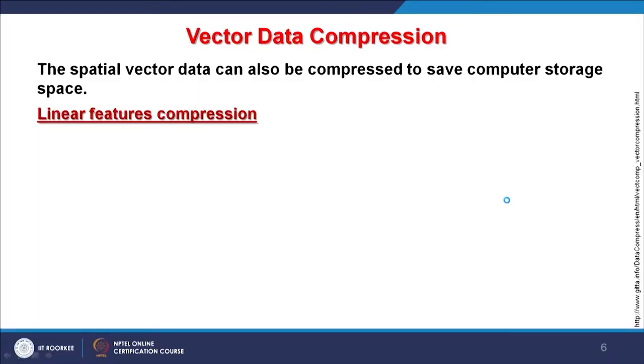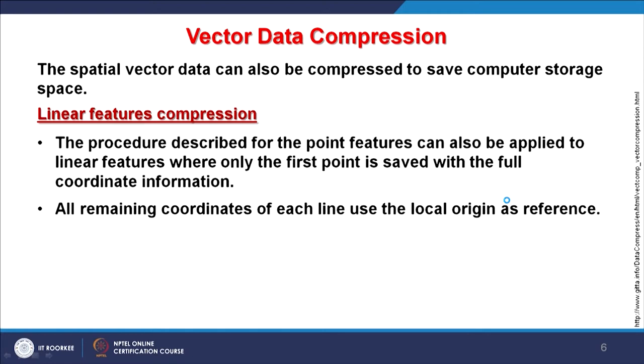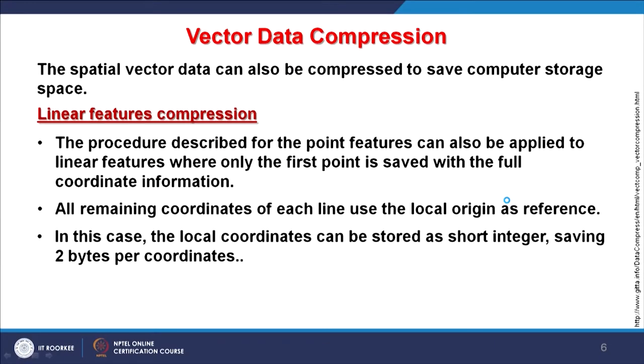For line features compression, this procedure for point features can also be applied similarly to line or polyline features, where only the first point is saved and then null coordinate information — and all remaining coordinates of each line use the local origin as reference. Instead of using easting-northing or geographic coordinates, local coordinates can be created and stored in meters or centimetres. Per point, if you can save a few bytes and you have thousands of such points, you will definitely save some megabytes of data.